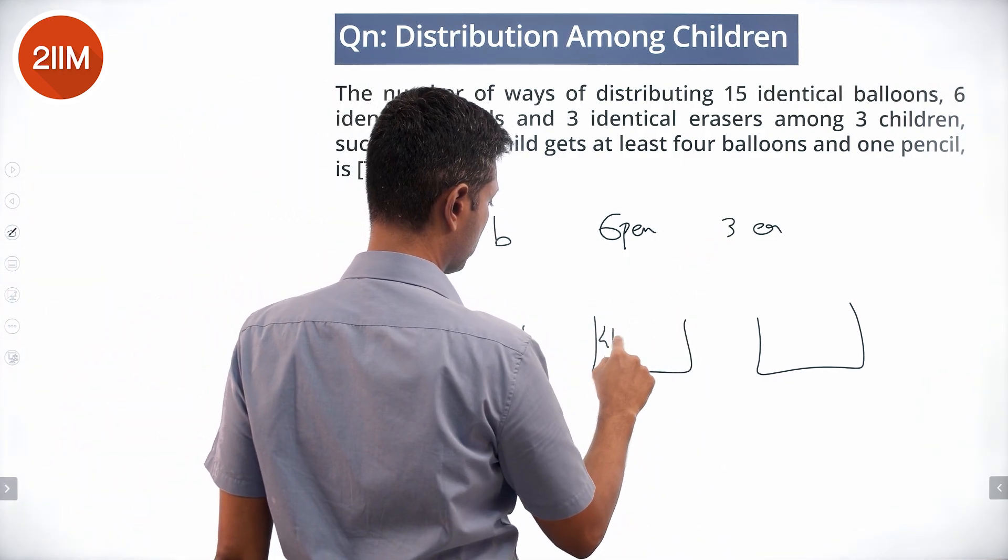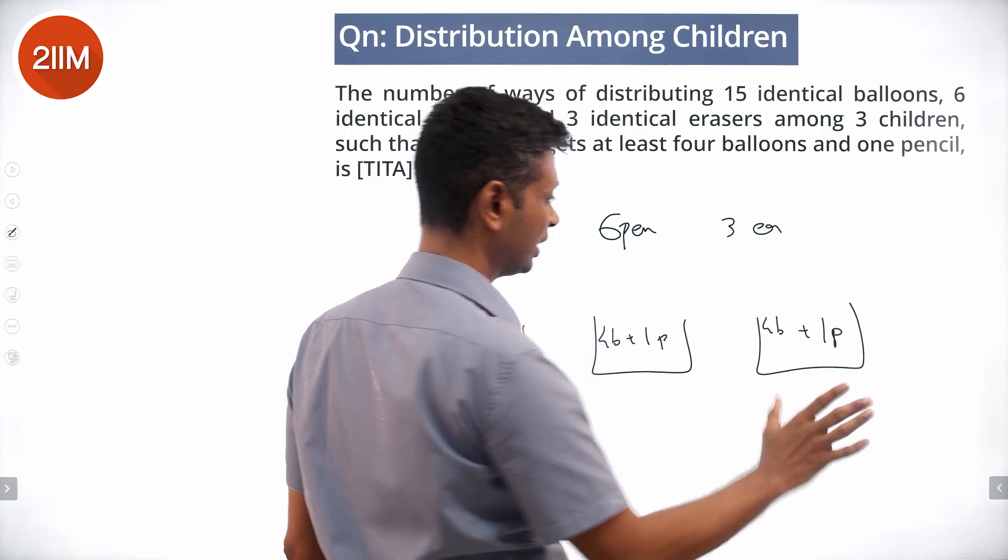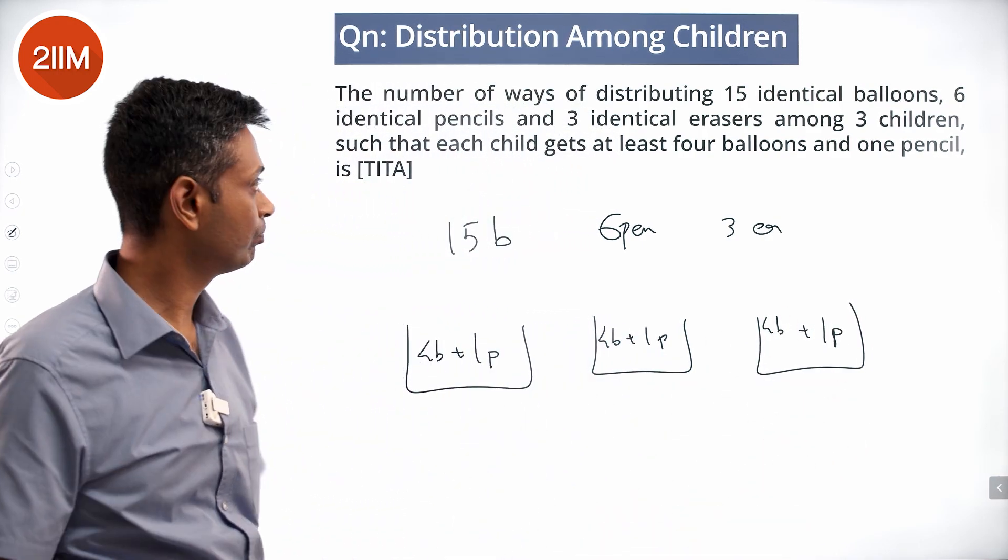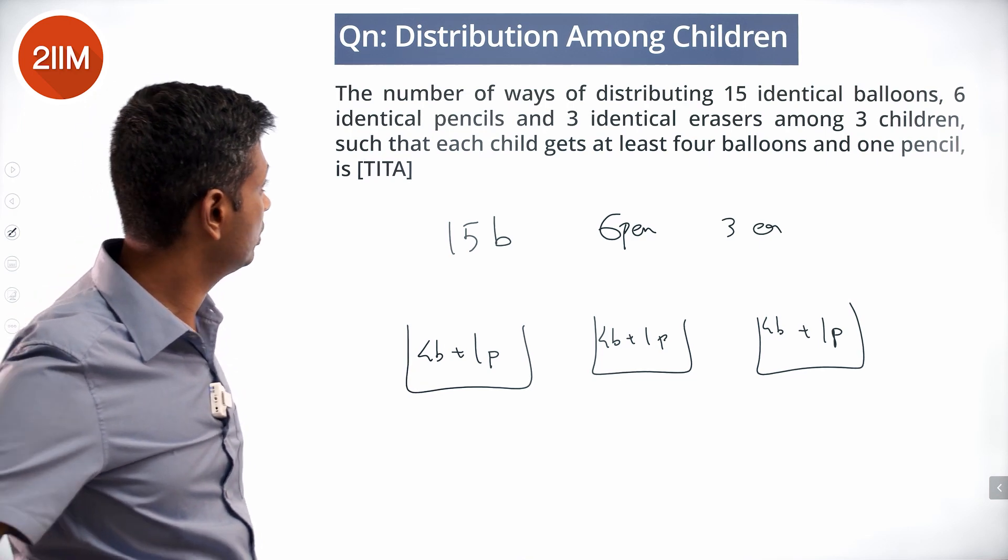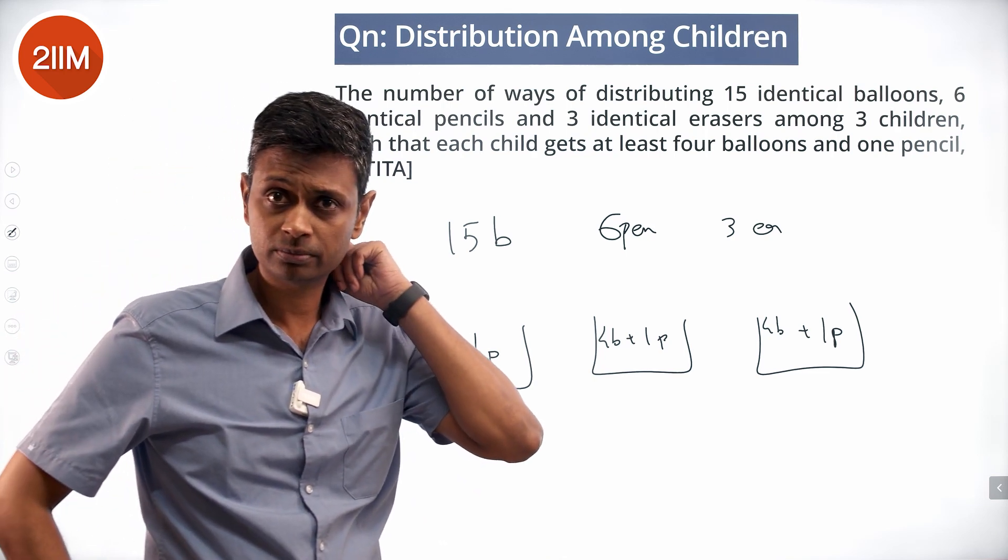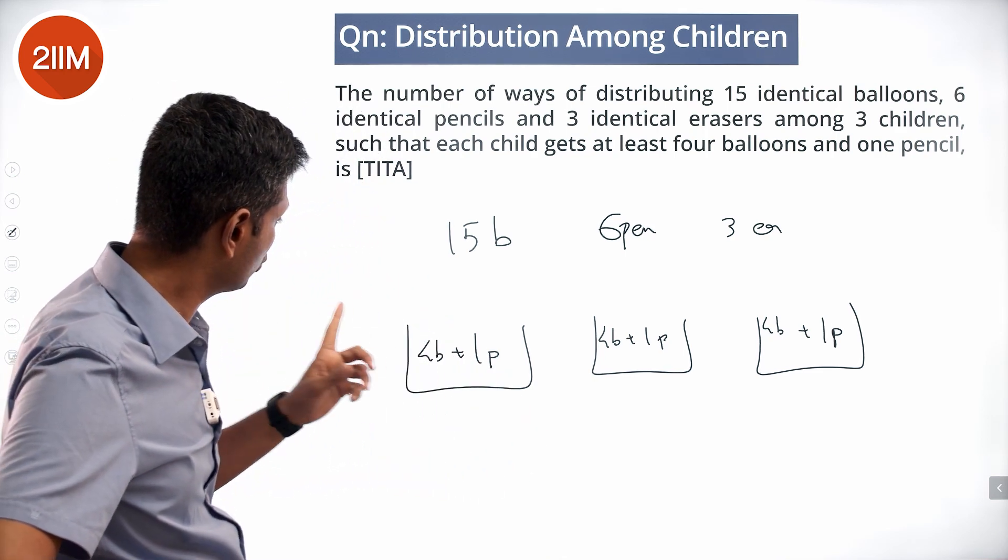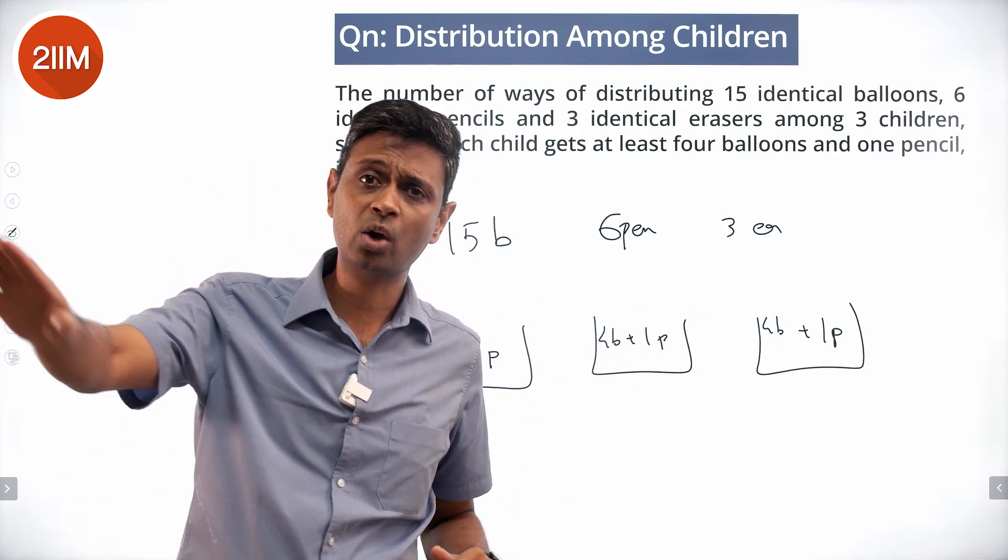So 4 balloons plus 1 pencil, 4 balloons plus 1 pencil, each of them definitely gets this. How do we distribute the rest? So only think about this: 4 balloons, 1 pencil, 4 balloons, 1 pencil, 4 balloons, 1 pencil have been accounted for.